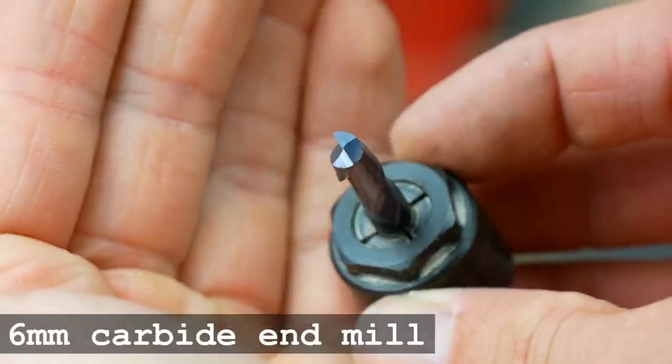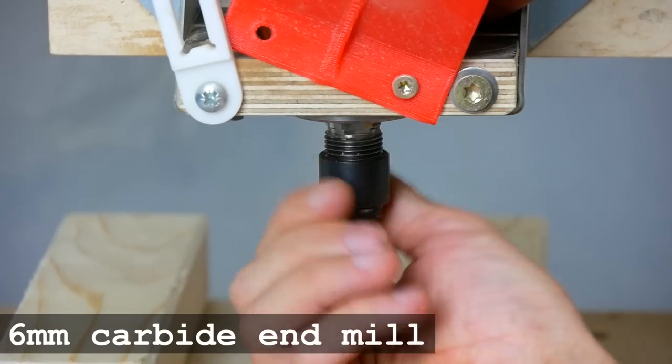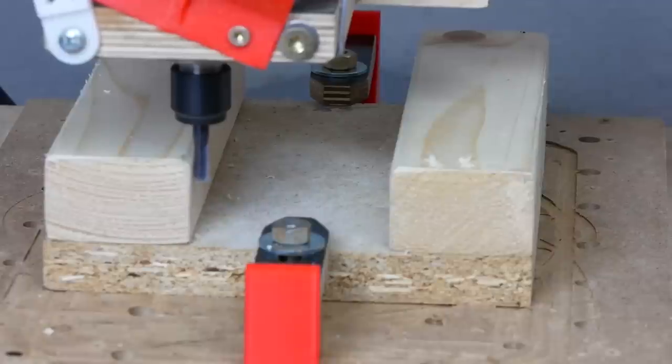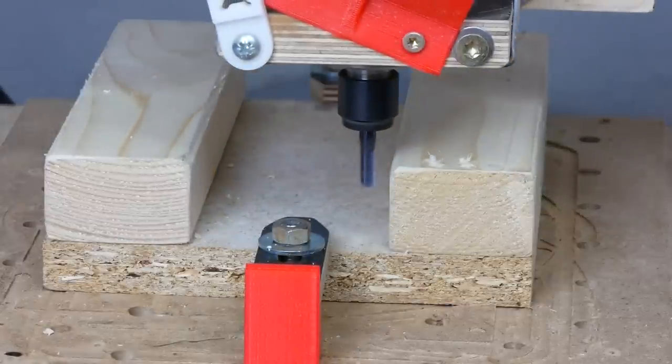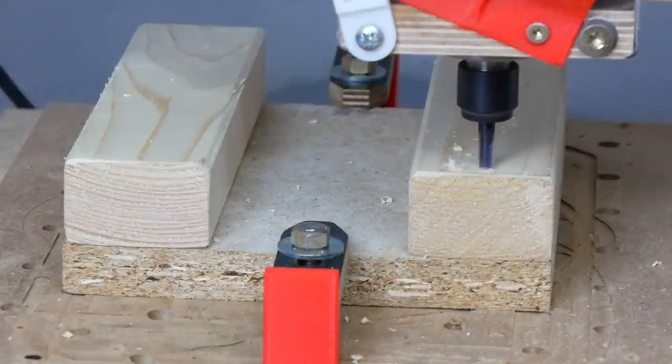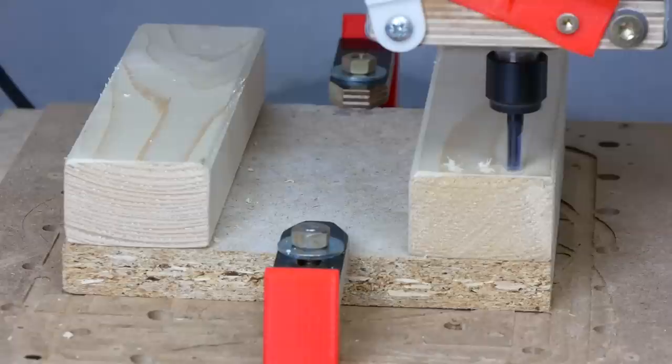I used the 6mm 2 flute end mill from Banggood which worked so well for the price it costs. I set my zero position by touching the blank with the end mill. Remember to properly set the increment while doing that or you will crash once, twice as I did. This would have probably been fatal for the end mill if I would have machined metal.